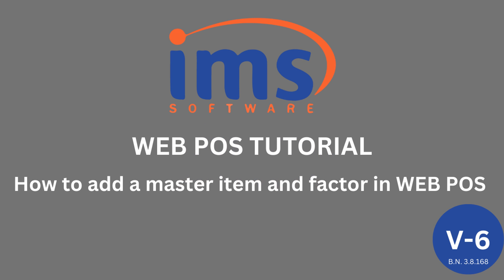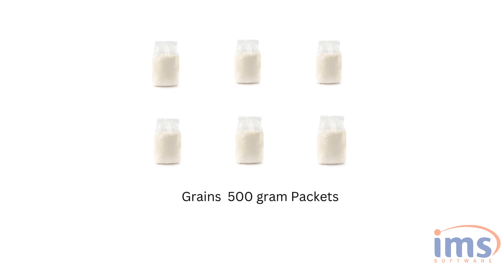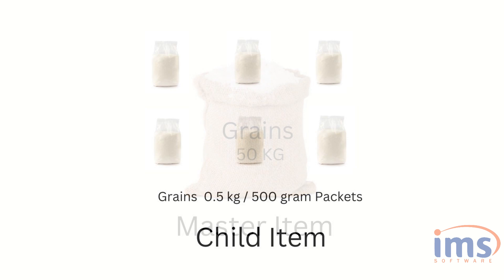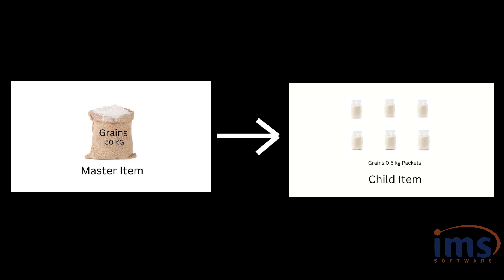In this tutorial we'll demonstrate how to add master item and conversion factor in web POS. The master item is a product that we purchase in bulk and sell in small units. For example, we purchase 50 kilograms of grain in a sack but sell it in 500 gram packets after repacking. The 50 kilogram grain sack is the master item, and the 500 gram packet is the child item.